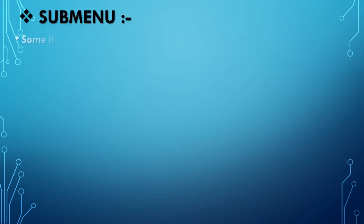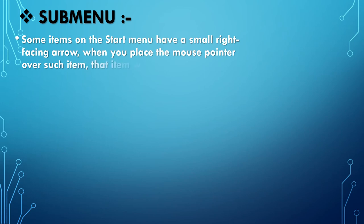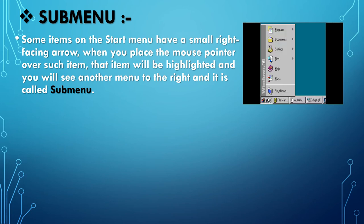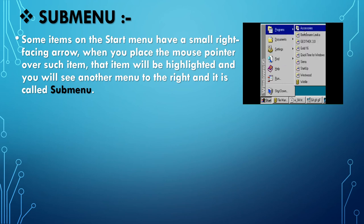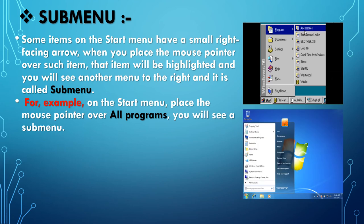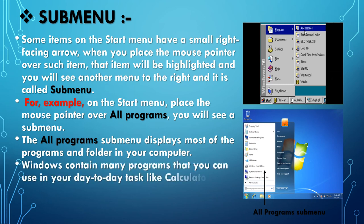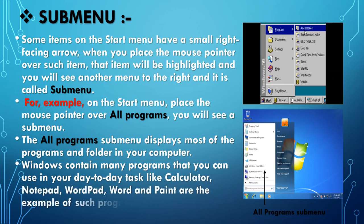Sub-menu: Some items on the Start menu have a small right-facing arrow. When you place the mouse pointer over such an item, it will be highlighted and you will see another menu to the right — this is called a sub-menu. For example, placing the mouse pointer over All Programs shows a sub-menu. The All Programs sub-menu displays most of the programs and folders on your computer. Windows contains many programs for day-to-day tasks like Calculator, Notepad, WordPad, Word, and Paint.